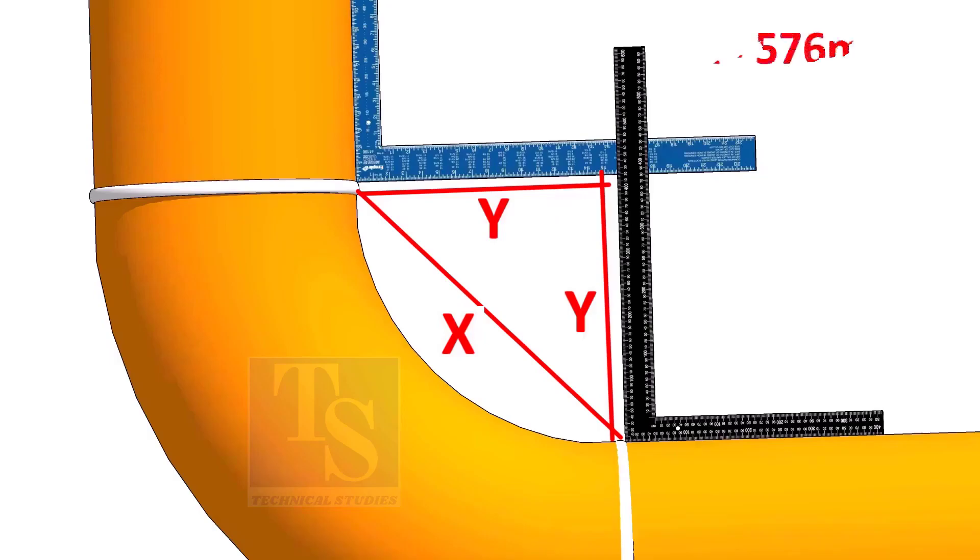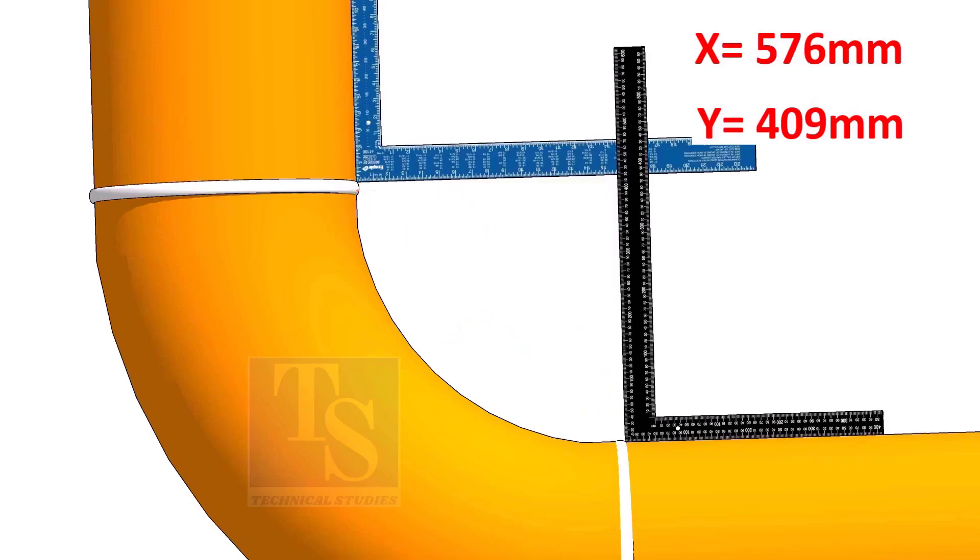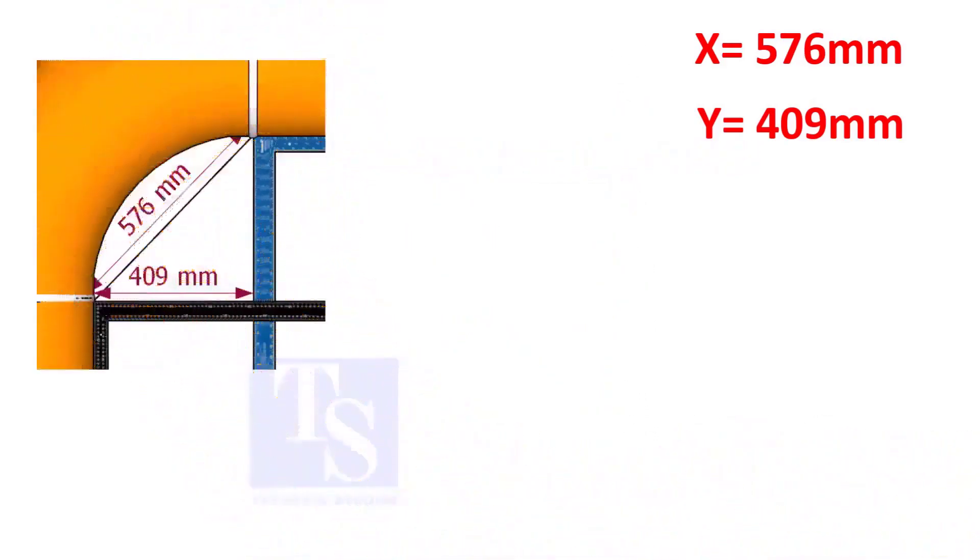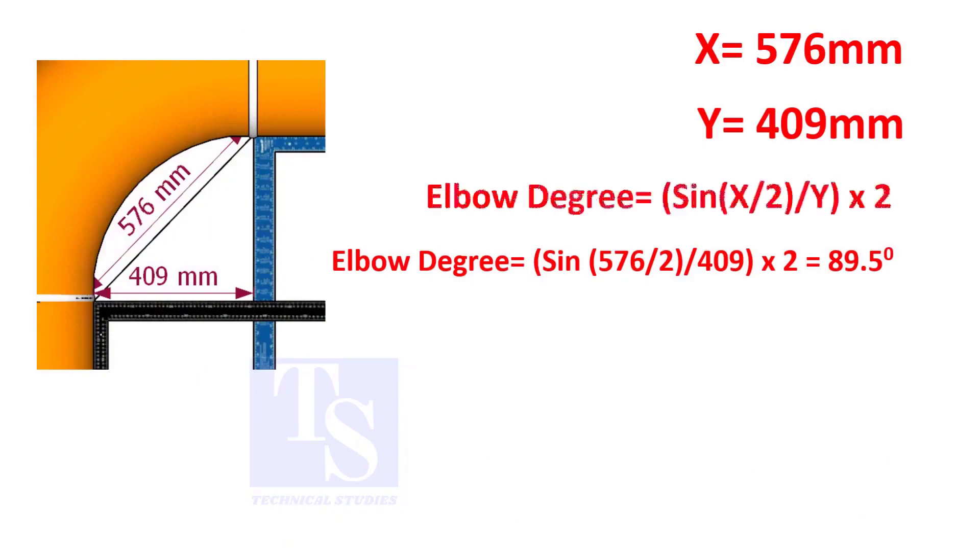Assume that the value of X is 576 and the value of Y is 409 millimeters. Apply the formula. The answer is 89.5 degrees.